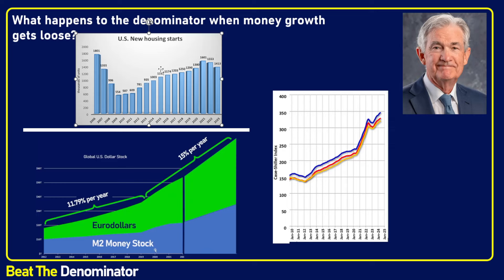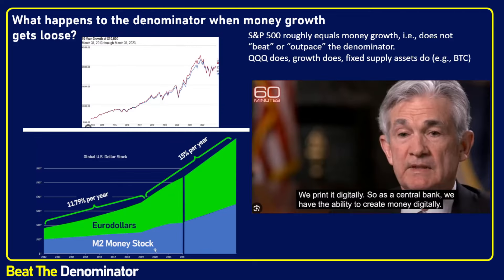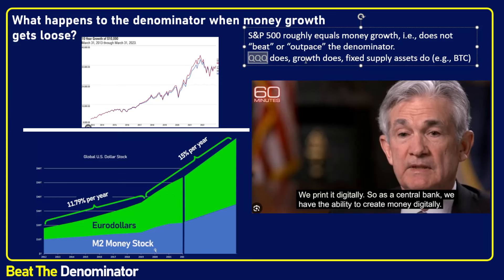The growth in the price of real estate just slightly lags the growth of new dollars, minus the dilution from new housing starts. So real estate does not beat the denominator. You beat the denominator when the growth of your assets surpasses the growth of US dollars. The S&P 500 is roughly the same as money growth. It does not outpace it. But there are assets that outpace it — like the QQQ. Growth stocks tend to outpace it.